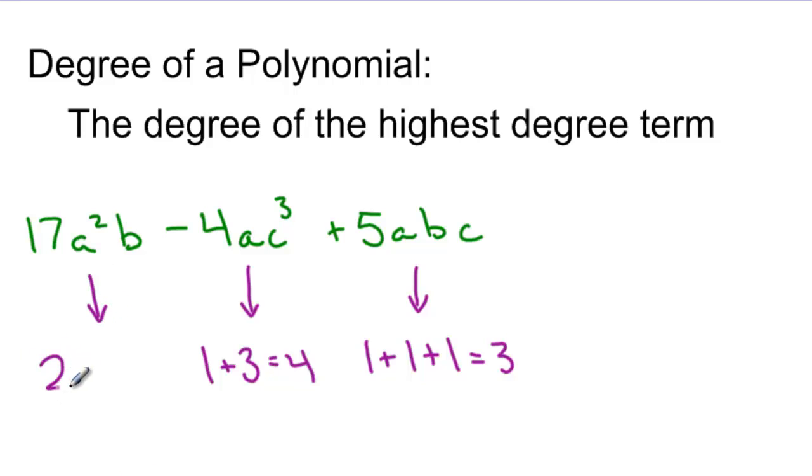And then my first term, a has a degree of 2, b has a degree of 1. So, overall that term has a degree of 3. I'm looking for the highest degree term, which is degree 4. So, the polynomial is degree 4.